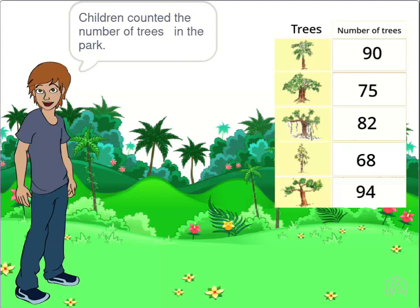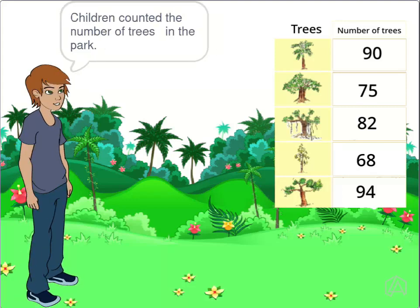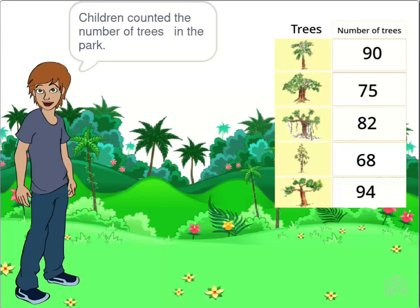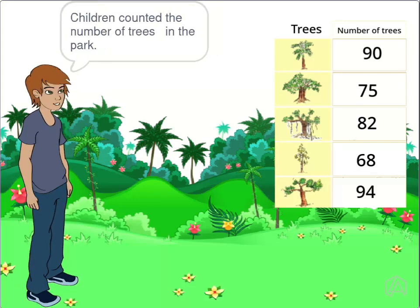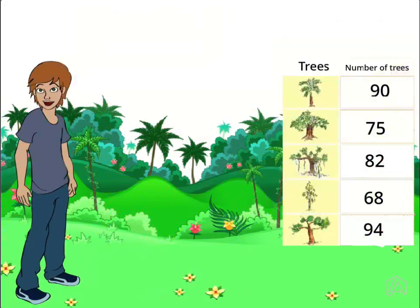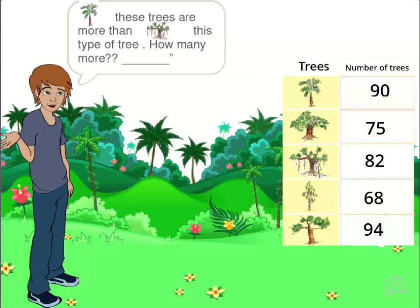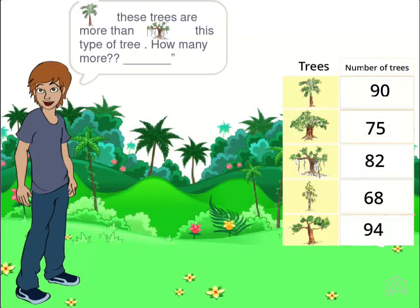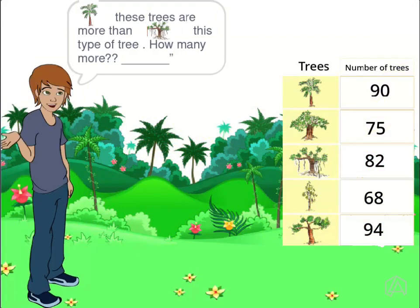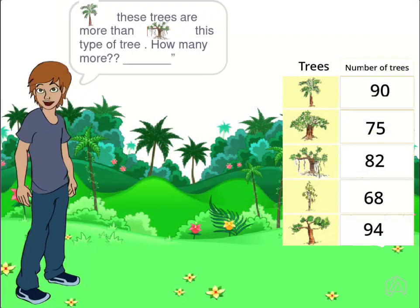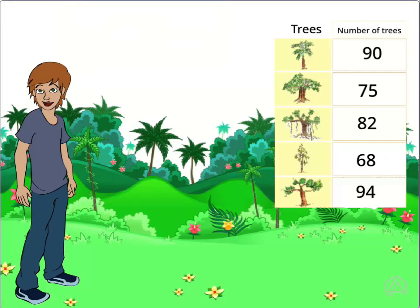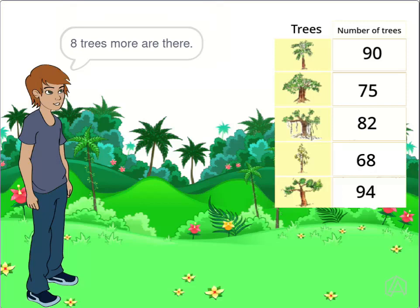Children count the number of trees in the park. These trees are more than this type of trees. How many more? Eight trees more are there.